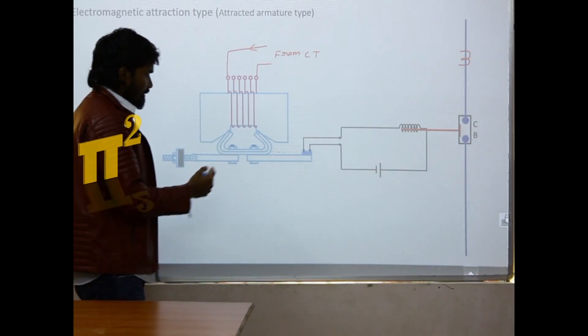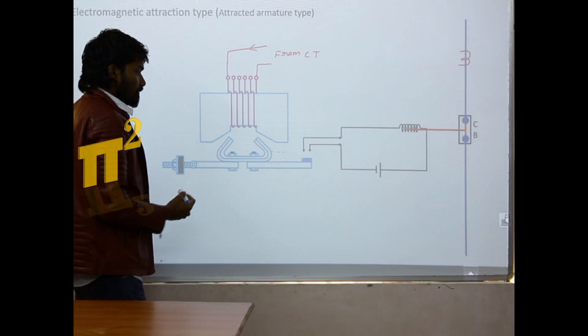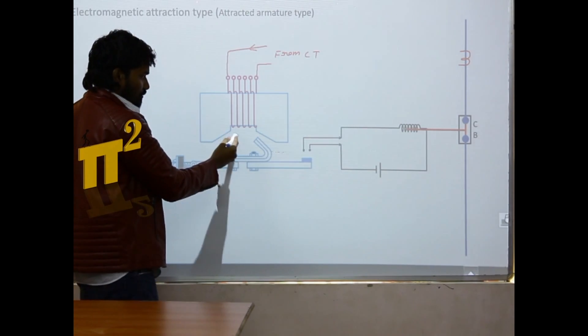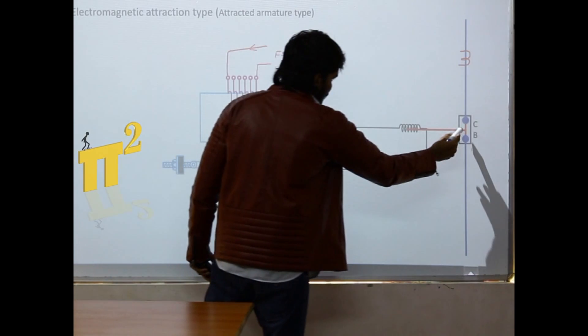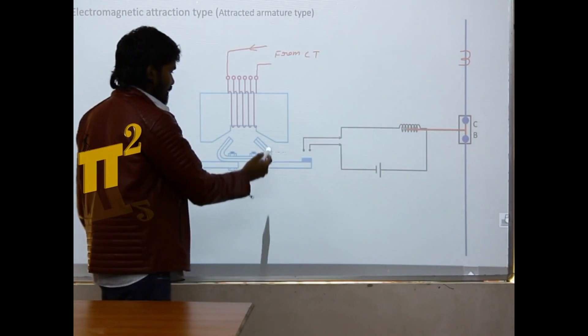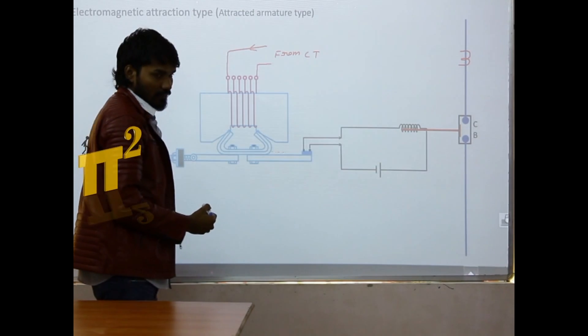You can see the same once again. When there is a high current, attraction force, two contacts will be closed, circuit breaker will go up and we will see the same. Yes, there it is.